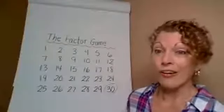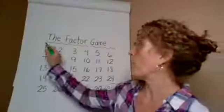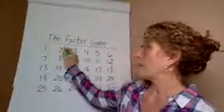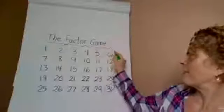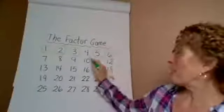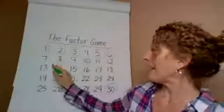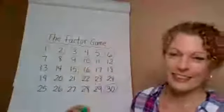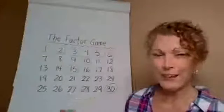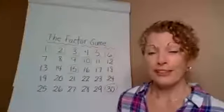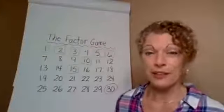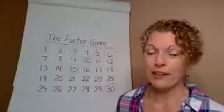And then I get all the factors of 30. So I would get one and two and three and five and six and 10 and 15. And they're like, what? How'd you get all those points? That's not fair. So they start to see 30 is not the best choice as a first choice in this game if you want to get the most points.